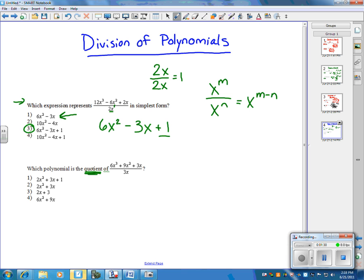Now, kind of the same thing, another question below. Same process, 6 divided by 3 is going to be 2. x to the third divided by x is x squared. Next term, middle term, 9 divided by 3 is going to be positive 3. x squared divided by x is x.